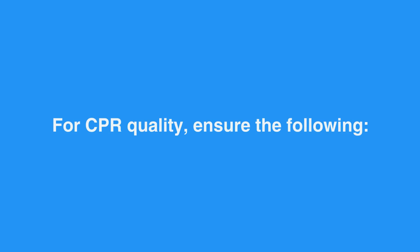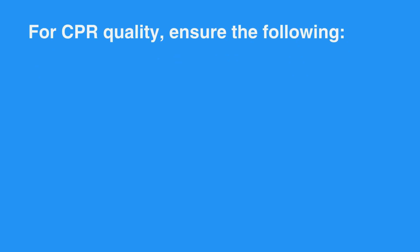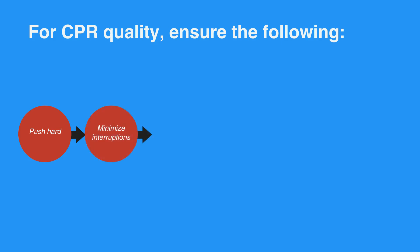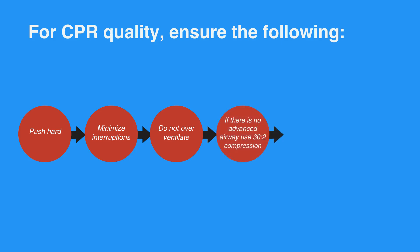For CPR quality, ensure the following. Push hard at 2.4 to 5-6 cm and fast at 100-120 BPM. Allow chest recoil, minimize interruptions, do not over-ventilate. If there is no advanced airway, use a 30 to 2 compression to ventilation ratio.